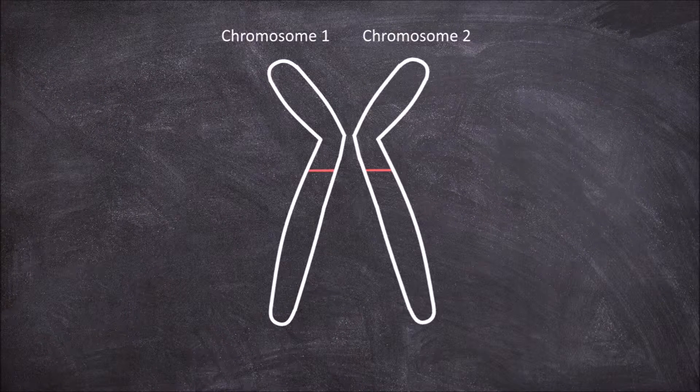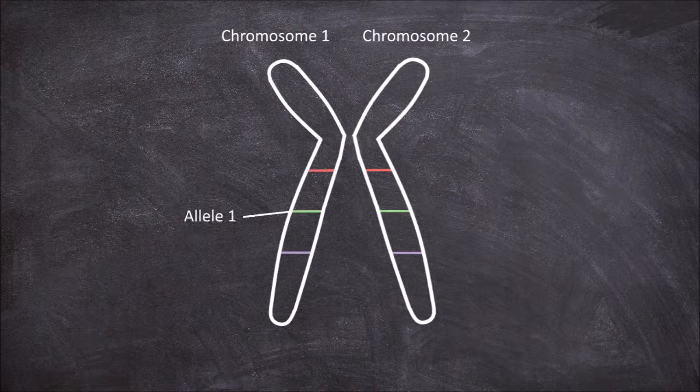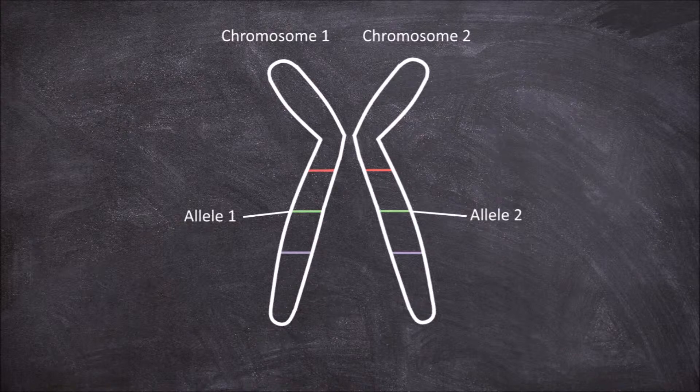Along these chromosomes are many genes that code for different traits within the individual. An allele relates to a single variant of one of these genes. Because there are two sets of chromosomes, there are two alleles for every gene.